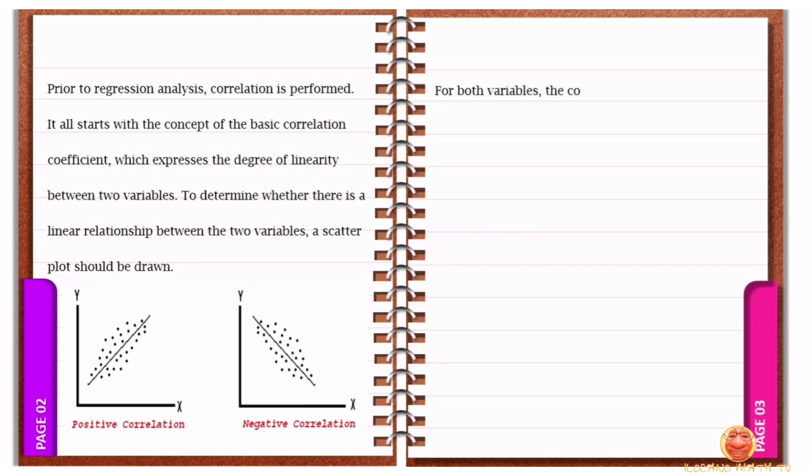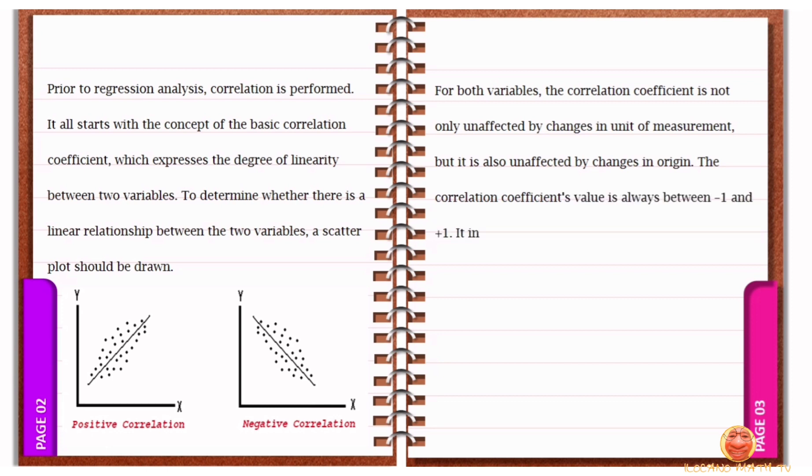For both variables, the correlation coefficient is not only unaffected by changes in unit of measurement, but it is also unaffected by changes in origin. The correlation coefficient's value is always between negative 1 and positive 1. It increases to negative 1 or positive 1 depending on whether the relationship is negative or positive as the scatter points get closer to the straight line.